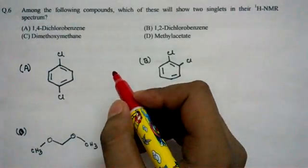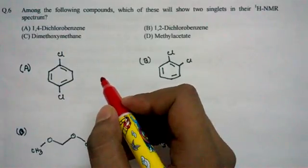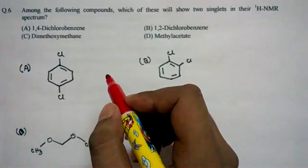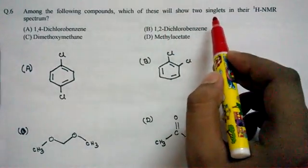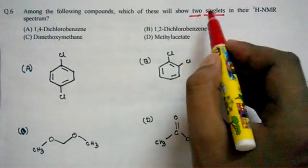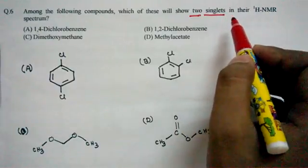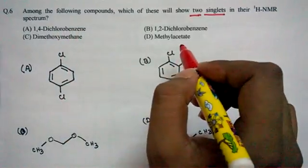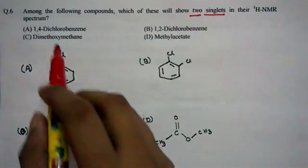In this video I'm going to solve another question from IIT JAM on NMR. This question asks: among the following compounds, which will show two singlets? We have to find the compounds which would give two peaks, and both peaks are singlet peaks in their proton NMR spectrum. There are four compounds and I've drawn the structure for all four.